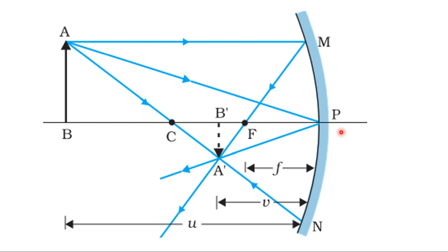Now, the lower half of the mirror is covered by an opaque non-reflective surface. The incident light rays that would fall on the lower half of the mirror are now blocked.